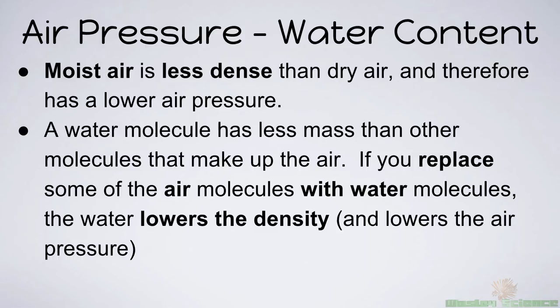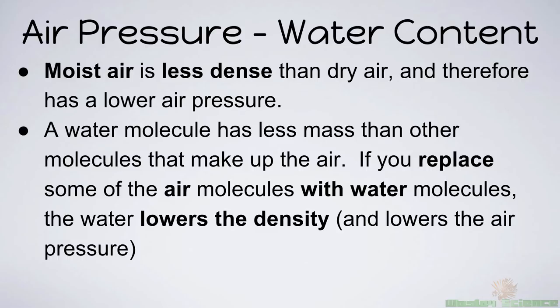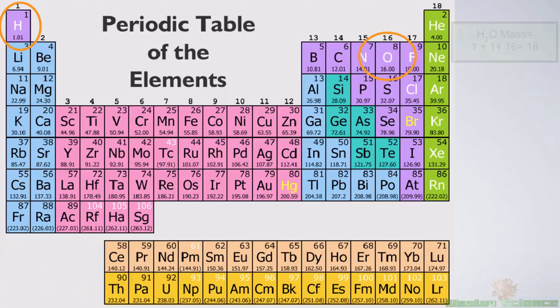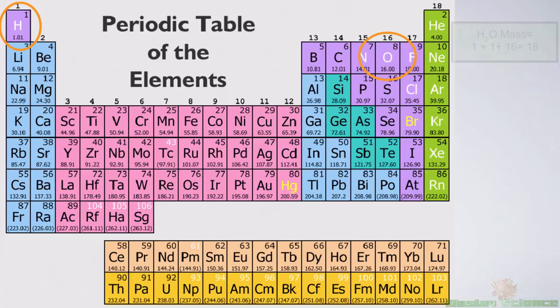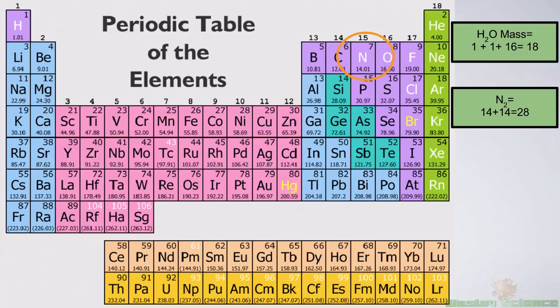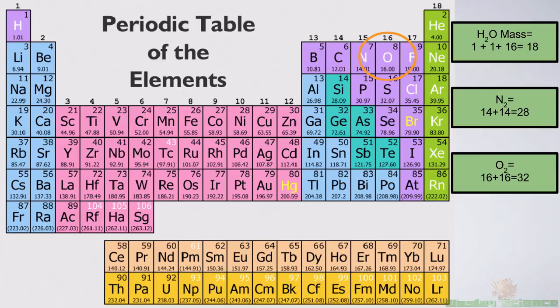Moist air is less dense than dry air and therefore has a lower air pressure. A water molecule has less mass than other molecules that make up the air, so replacing air molecules with water lowers the air's density. Let's verify this: H₂O has a molar mass of 1+1+16 = 18. Nitrogen (N₂) is 14+14 = 28. Oxygen (O₂) is 16+16 = 32. That mathematically proves water is less dense than what the majority of the atmosphere is made of — 78% nitrogen and 21% oxygen.